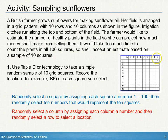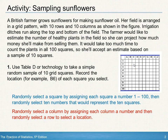Or, they could randomly select a column by assigning numbers from 1 to 10, and then randomly select a row, and that would allow you to select a random square. You could repeat this 10 times.